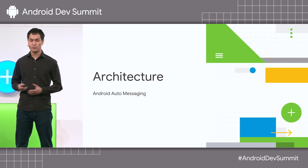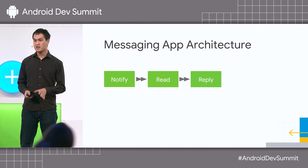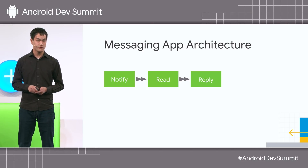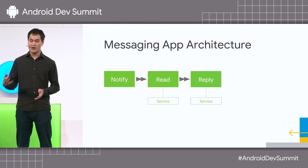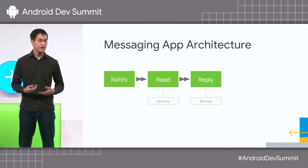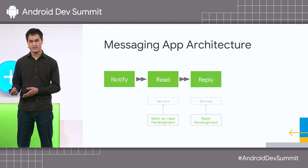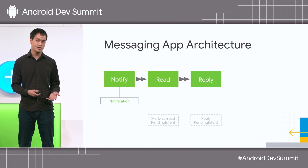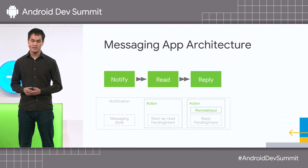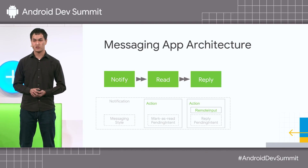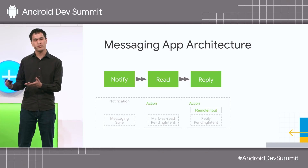Let's see how Android Auto interfaces with this, starting on the messaging app side. From Android Auto's point of view, messaging apps have three core functions: notifying users of messages, marking those messages as read, and replying to those messages. Apps can implement reading and replying with services, triggered internally with intents or externally, like via Android Auto, with pending intents. Notifying is done via an Android notification, and the messaging information is provided with messaging style. The mark as read and reply pending intents are wrapped in actions and both provided in the notification. Note that the reply action has a remote input added that acts as a sort of input field for the reply.